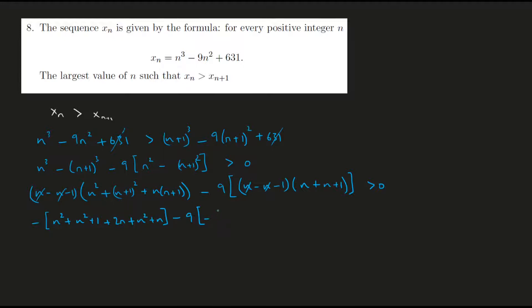This would be minus 2n plus 1 is greater than 0. Now I'll just open up the brackets. We should get minus 3n squared minus 3n minus 1 plus 18n plus 9 is greater than 0, and this simplifies to minus 3n square plus 15n plus 8 is greater than 0.